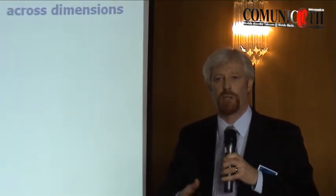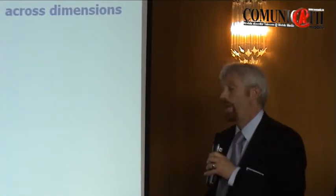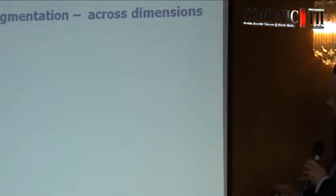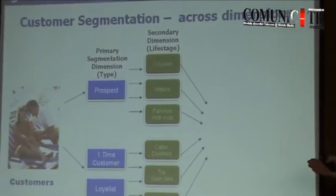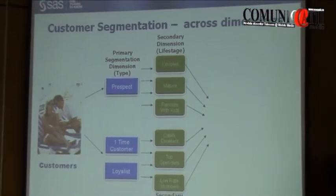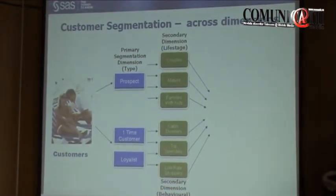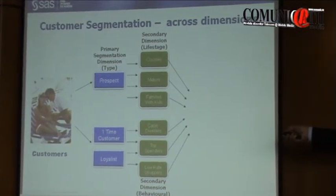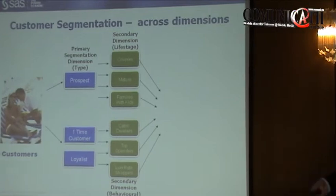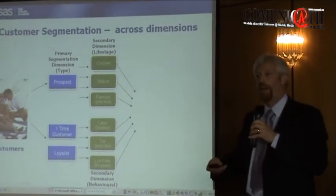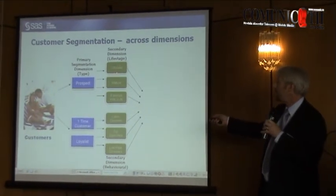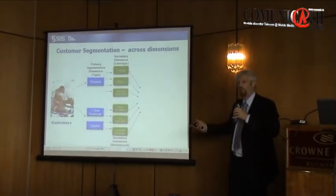Another example, this from the United States — it's a cruise line leisure industry. They use segmentation, slightly more simple, to identify segments for their cruise holidays. First of all, they differentiate between people who haven't travelled with them before, people who have, and people who are regular travellers. And then going into a secondary dimension, for people who haven't travelled before they bring in the geodemographic — they do that because they can buy that information in, and that's the only information they've got.